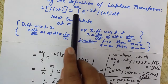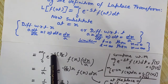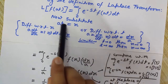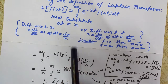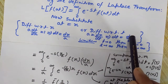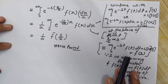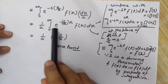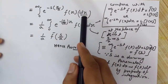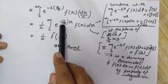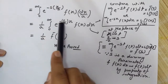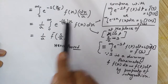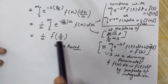So this can be written as the integral from 0 to infinity of e to the power minus (s * x/a) times f(x) times dx/a. Now taking the 1/a out, it becomes (1/a) times the integral from 0 to infinity of e to the power minus (s/a) * x times f(x) dx.